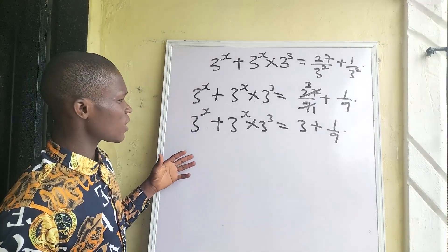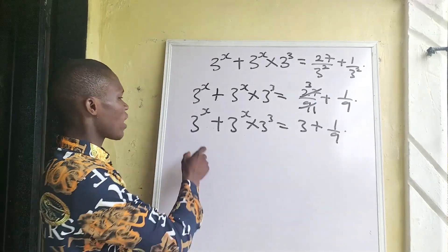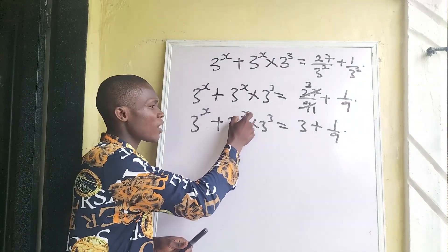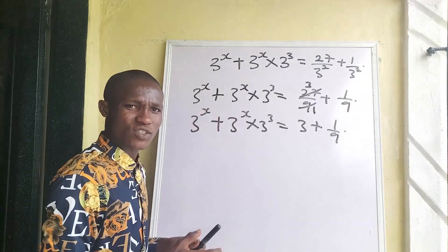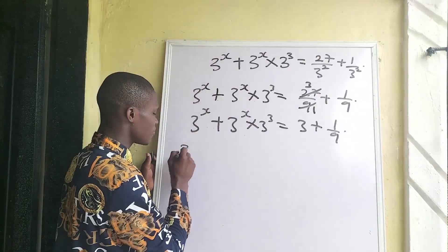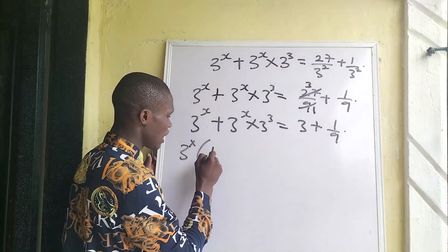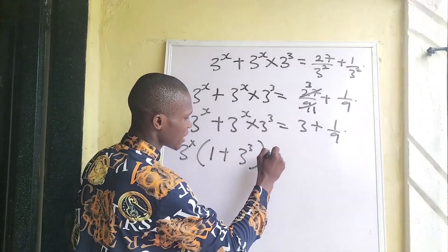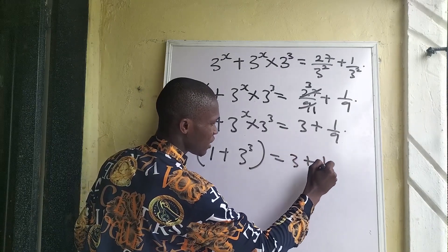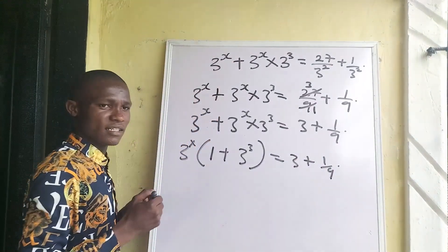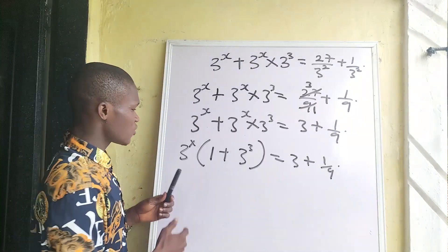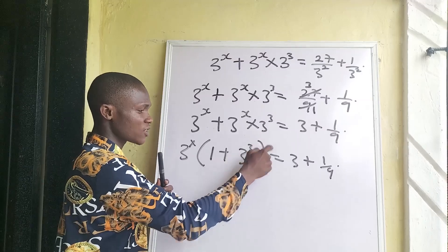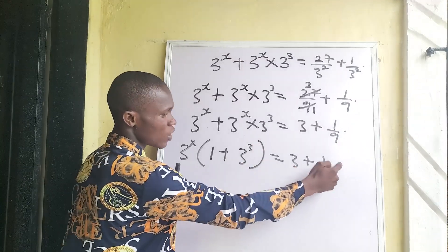After having this, we factor out 3 to the power of x from the left hand side. Doing that we get 3 to the power of x times open bracket 1 plus 3 to the power of 3 close bracket, equal to 3 plus 1 over 9. So 3 to the power of x times open bracket 1 plus 3 to the power of 3 close bracket equals 3 plus 1 over 9.